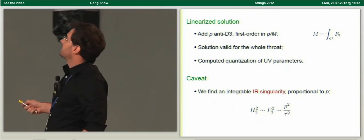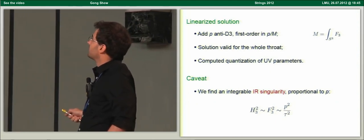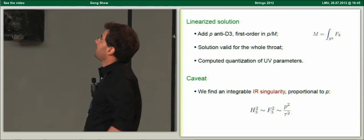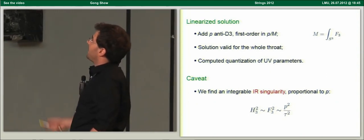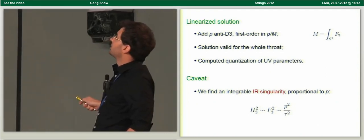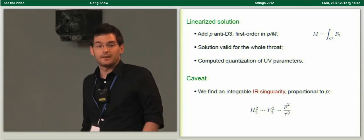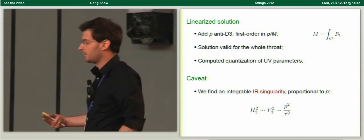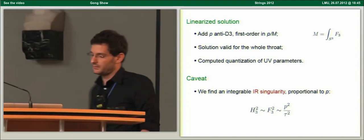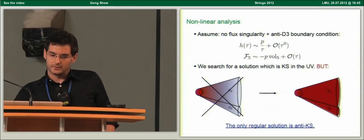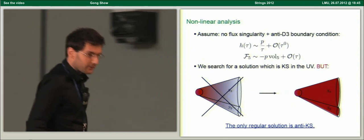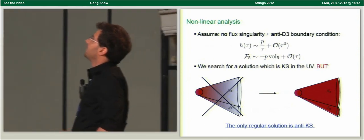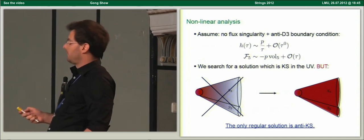This singularity is not directly sourced from the anti-D3 brane, so the interpretation is not clear. We are in the near-brane region in which the linearized approximation clearly breaks down, and it has been suggested that this singularity could be an artifact of perturbation theory. Now we perform a full non-linear analysis in the near-brane region.